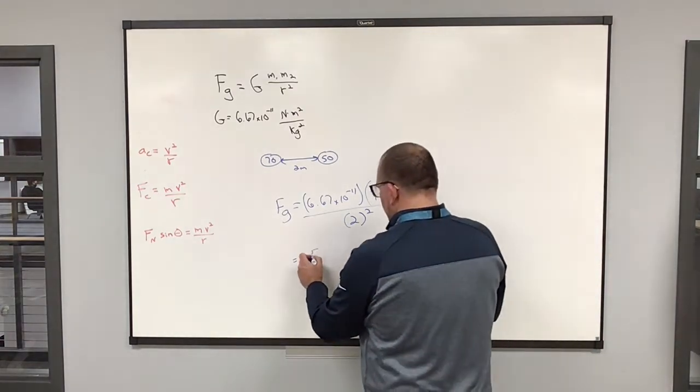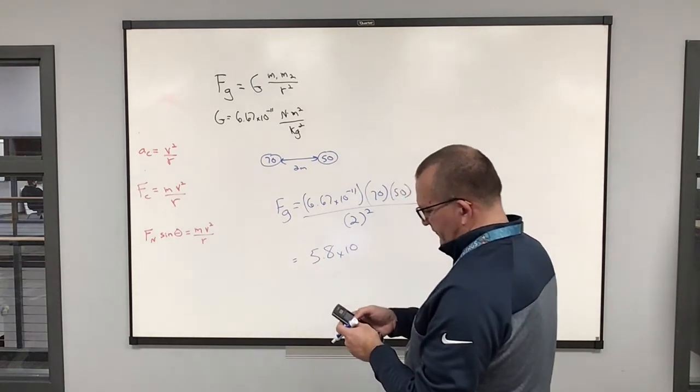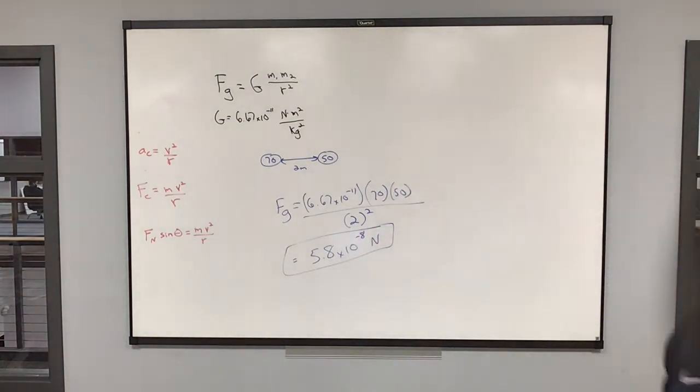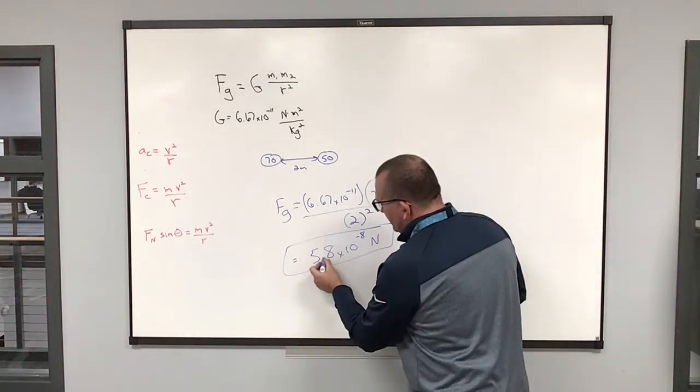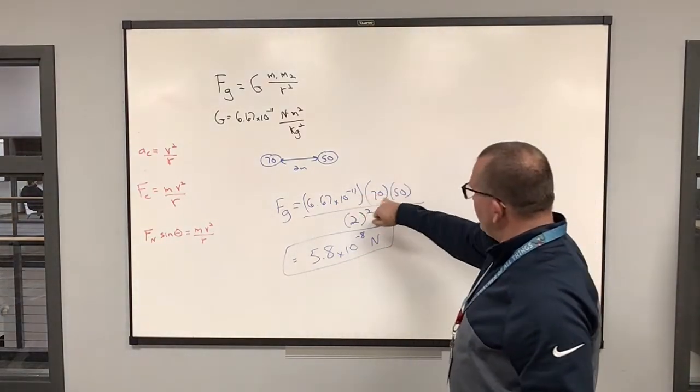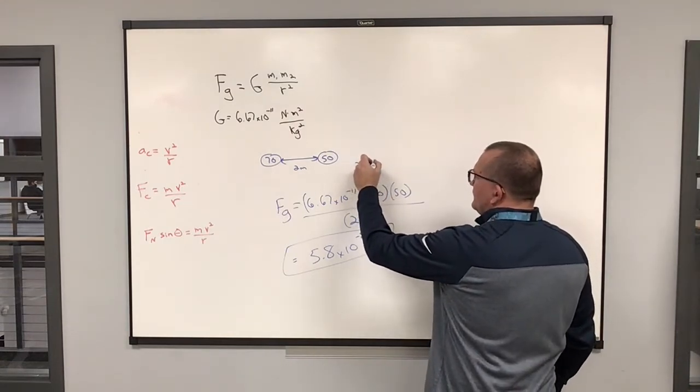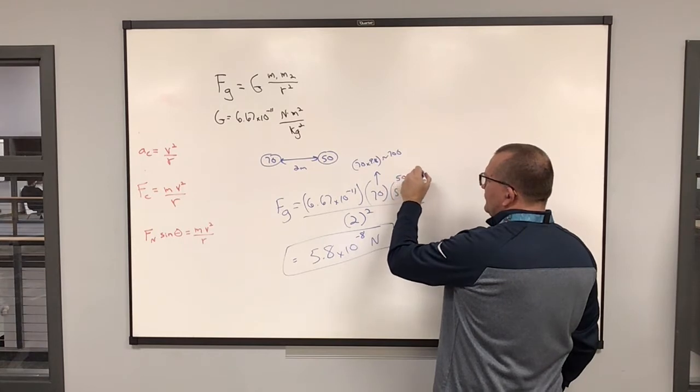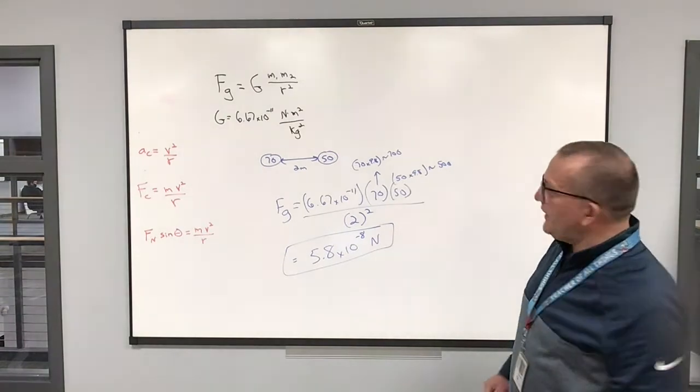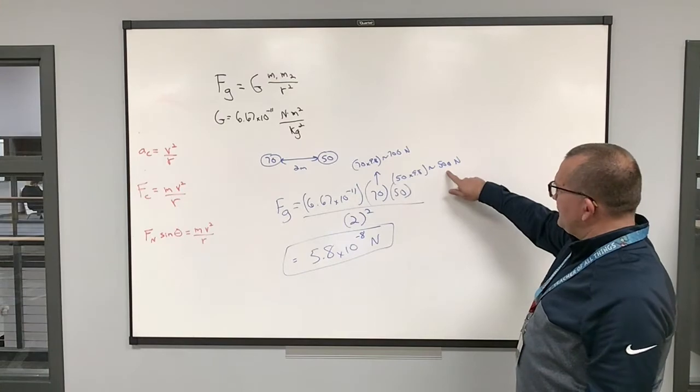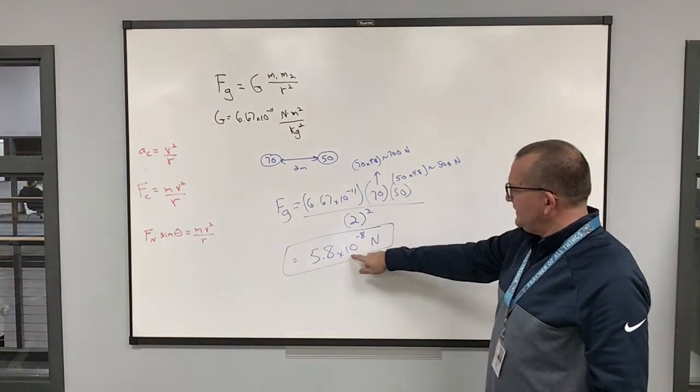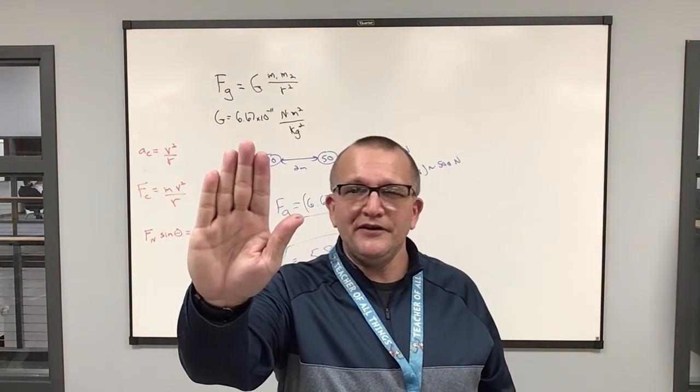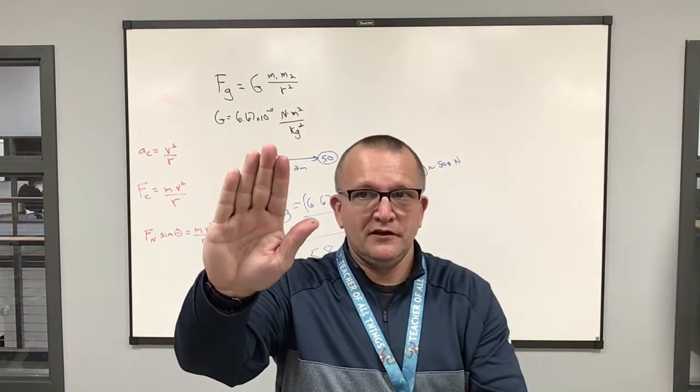Now look at the answer we're going to get for this because that is interesting. 6.67 e negative 11 times 70 times 50 divided by four. And this number is really, really small. 5.8 times 10 to the negative eight newtons. This is a really small number. That's like the force of gravity, but think about the force of gravity from the earth on these two items. So if I take 70 times 9.8, 70 times 10, it's about 750 times 9.8. I'm going to approximate that to be 500. So the force of gravity on these two people from the earth is 700 and 500 newtons. The force of attraction between the two people is way smaller.